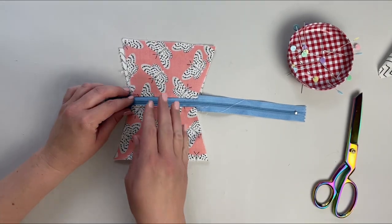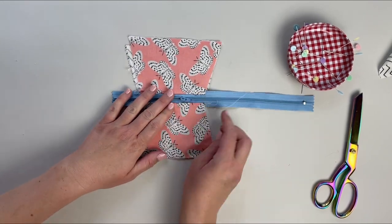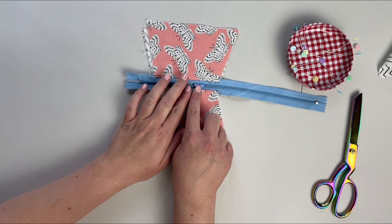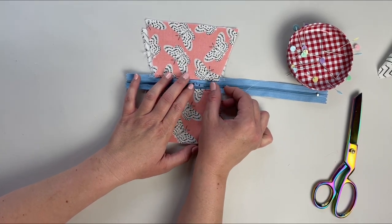Okay, the next step is to open the zipper partway. You want to open it enough so that it's out of the way of where we're going to sew, so at least an inch over. We don't want to hit that when we sew.